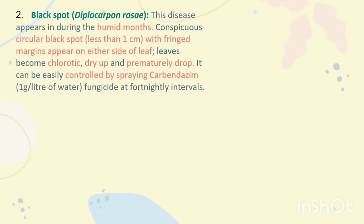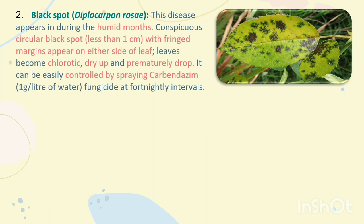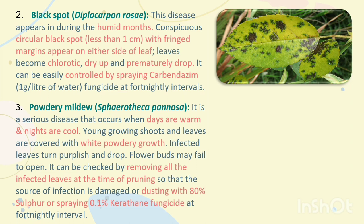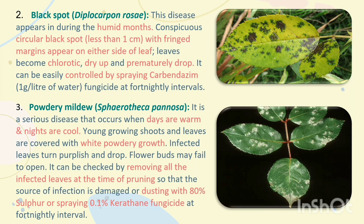Black Spot (Diplocarpon rosae): this disease appears during humid months. Conspicuous circular black spots less than 1 cm with fringed margins appear on either side of the leaf. Leaves become chlorotic, dry up and prematurely drop. It can be controlled by spraying Captan at 1 g per litre of water, or fungicide at 4-day intervals. Powdery Mildew: a serious disease occurring when days are warm and nights are cold. Young growing shoots and leaves are covered with white powdery growth. Infected leaves turn purple and drop; flower buds may fail to open. Controlled by removing all infected leaves at pruning, or dusting with 80% sulfur, or spraying 0.1% Karathane fungicide.